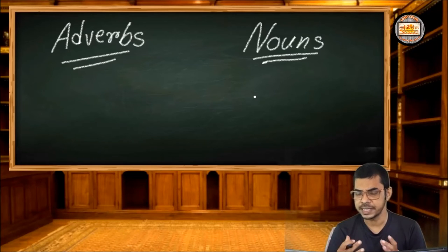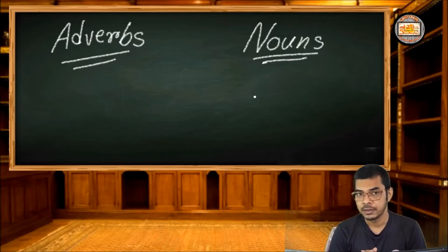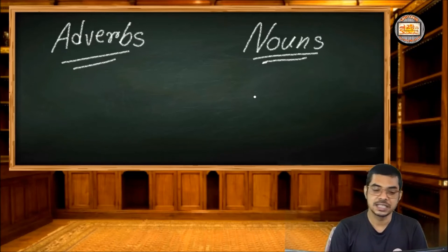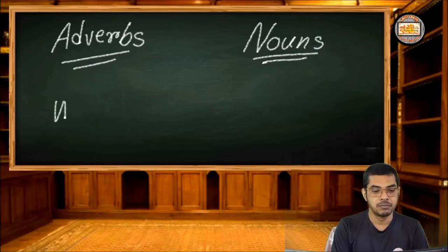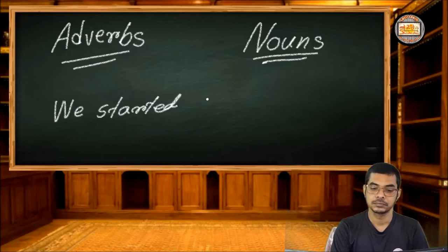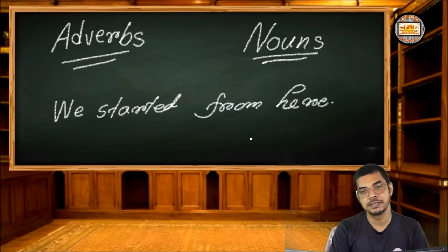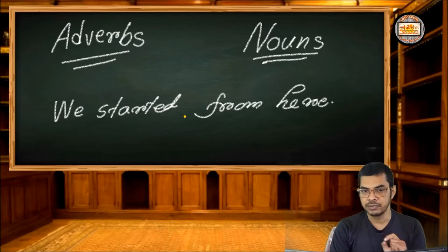So if we basically look at the nouns, how they are used, it's better to find it out in some other ways. Let me have a sentence here. We started from here. Let me have this sentence. We started from here. Now if we look at this sentence keenly, we observe this sentence.